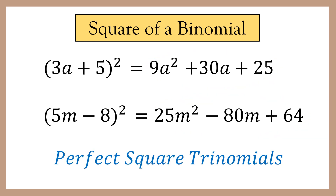The sign of the binomial is the same as the sign of the middle term of the trinomial. So if the sign of the binomial is positive, then the middle term of the trinomial is also positive. If the sign of the binomial is negative, then the middle term of the trinomial is negative.